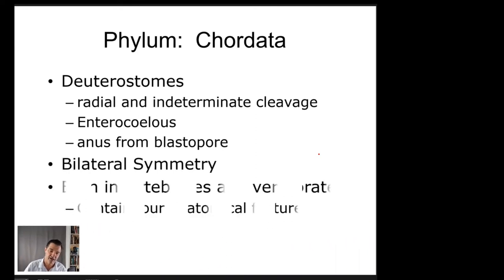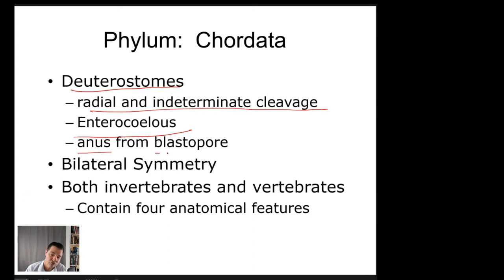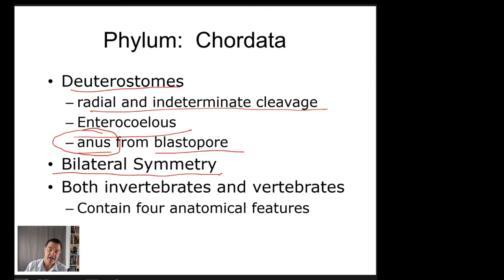So we're talking about the phylum Chordata. Chordates are deuterostomes, just like the echinoderms. They have radial and indeterminate cleavage, meaning they have stem cells that can change into other things. They have enterocoelous development, and the anus comes from the blastopore — that's the meaning of deuterostome, where the second opening becomes the mouth. They're generally bilaterally symmetrical, and the group includes both invertebrates and vertebrates.